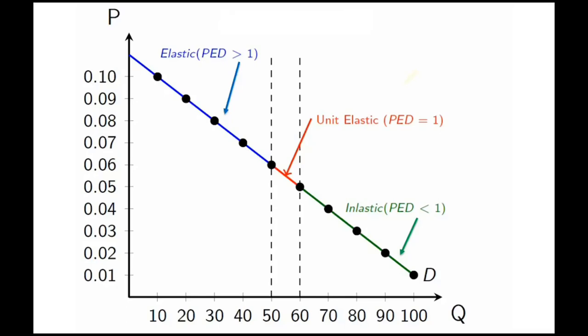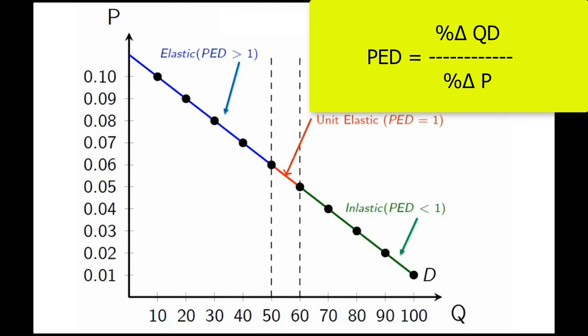When you look at a linear demand curve, the slope is the same everywhere by definition. So why does the elasticity change? Remember what elasticity means: you have a percentage change in quantity demanded divided by a percentage change in price.